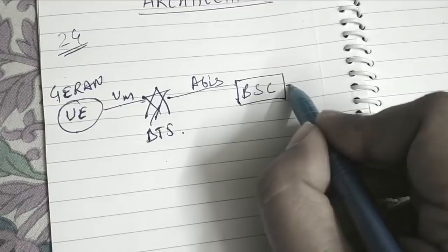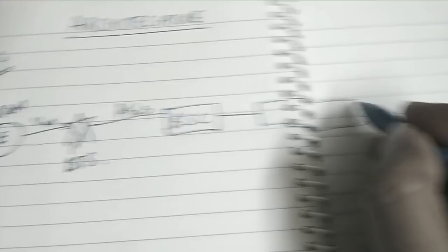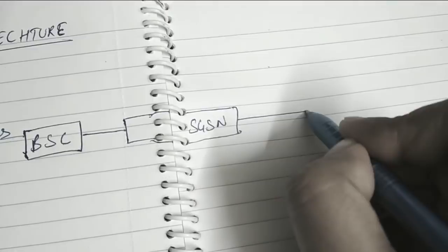Now BSC is connected to the nearest SGSN, that is Serving GPRS Supporting Node. This is our SGSN, Serving GPRS Supporting Node. And then this SGSN is connected to the nearest GGSN.